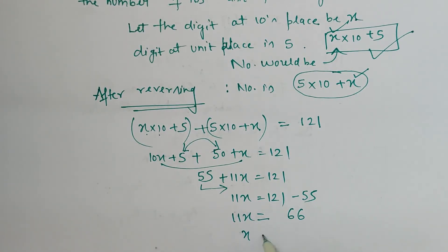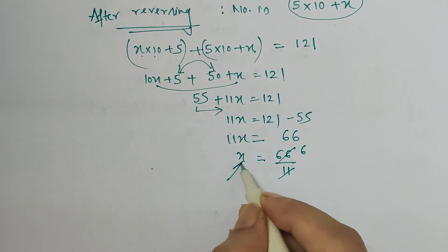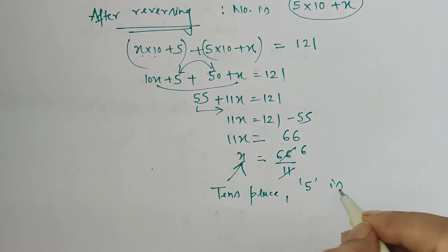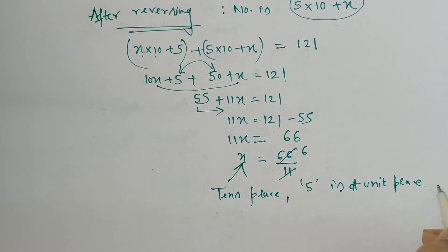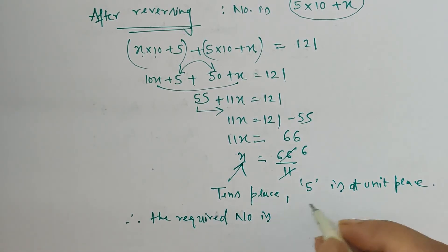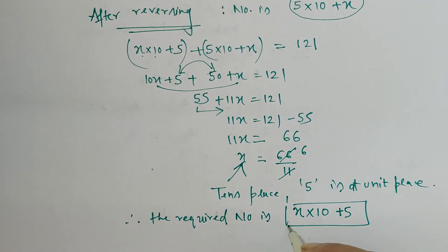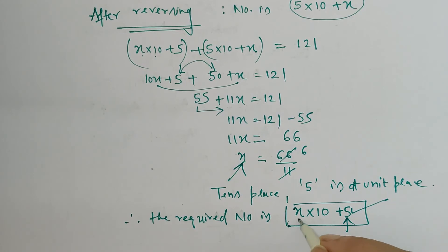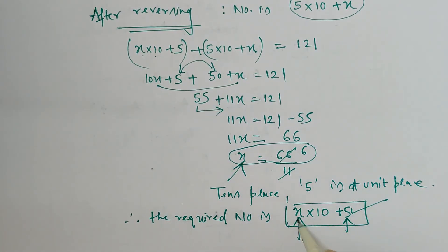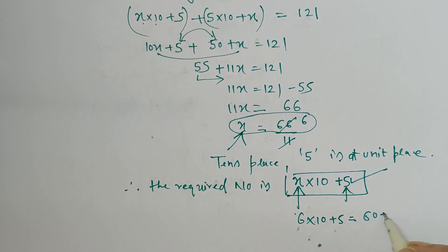We have 11x equals 66, so x is 66 upon 11, which is 6. Therefore, as per the assumption, x was at tens place and 5 is at unit place. So the required number is x into 10 plus 5. The x obtained here is 6, so 6 into 10 plus 5 equals 60 plus 5, which is 65.